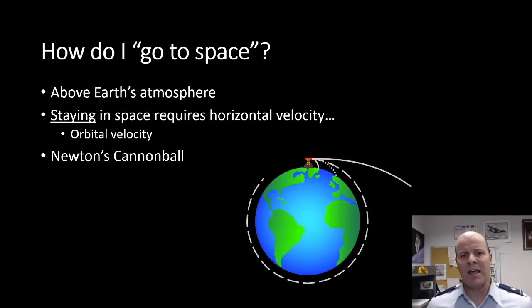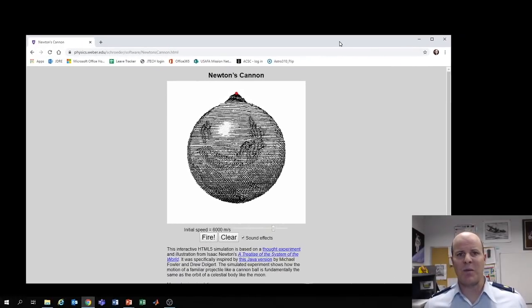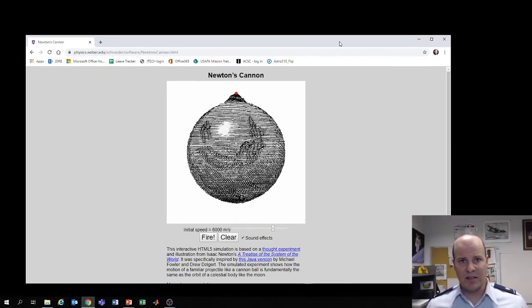So how do I get to space? Getting to space is simply a matter of being above Earth's atmosphere but staying there is going to require significant horizontal velocity. What we're going to call orbital velocity. And here's why. Newton famously developed a thought experiment to describe this phenomena by talking about a cannon fired from a very high mountain. So in this thought experiment you have to imagine there's a cannon with cannon balls on a very high mountain where there's no air resistance.